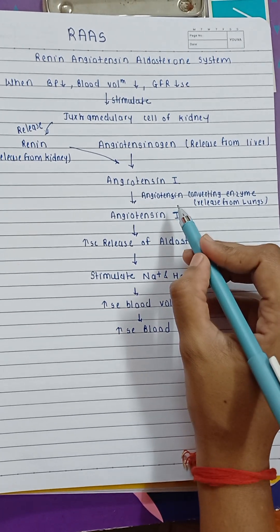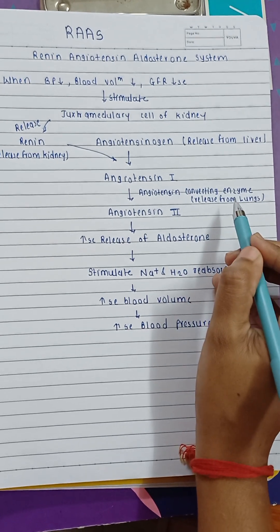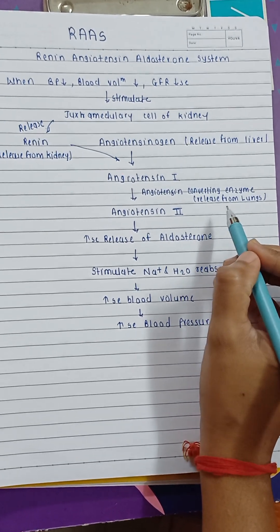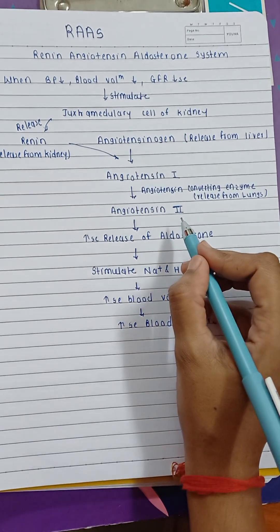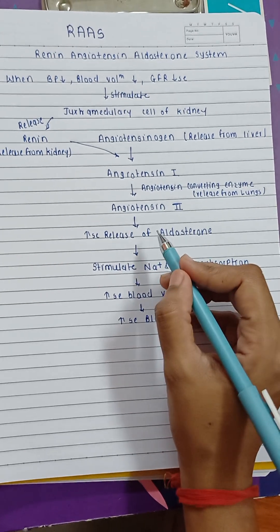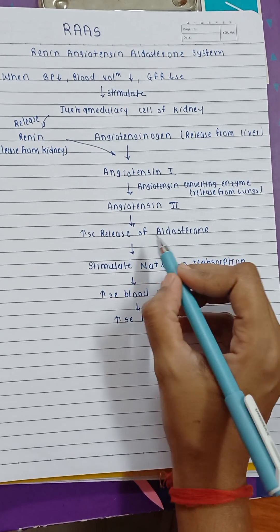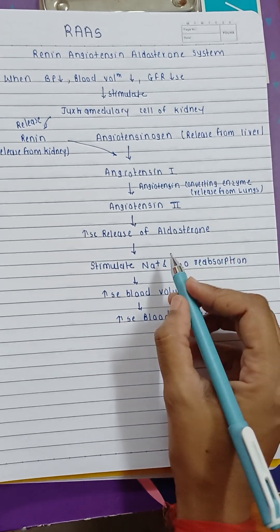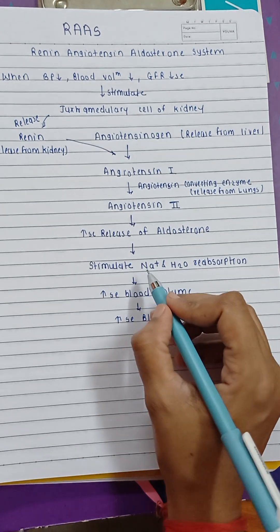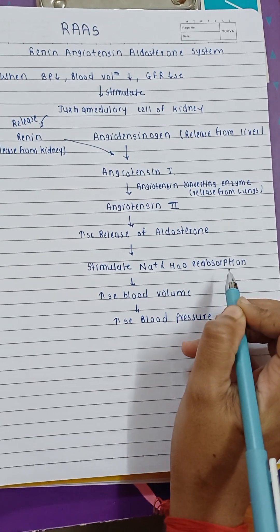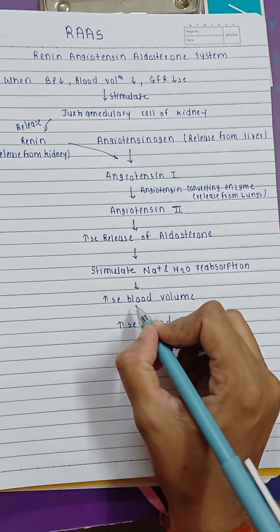Then Angiotensin I is converted into Angiotensin II in the presence of angiotensin-converting enzyme (ACE), which is released from the lungs. Angiotensin II then stimulates the release of aldosterone, and aldosterone stimulates sodium and water reabsorption.